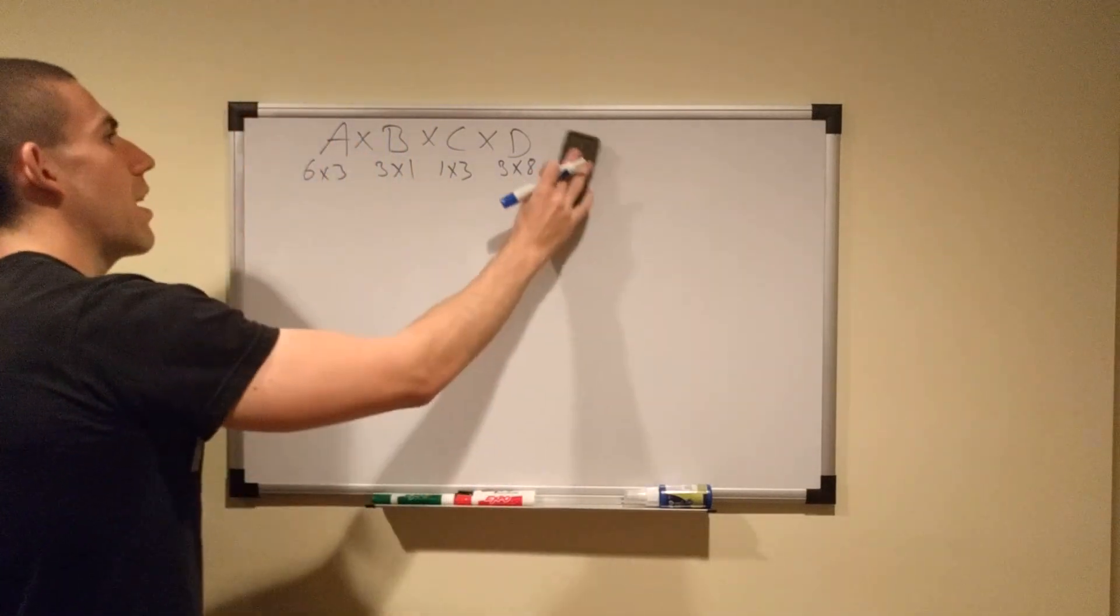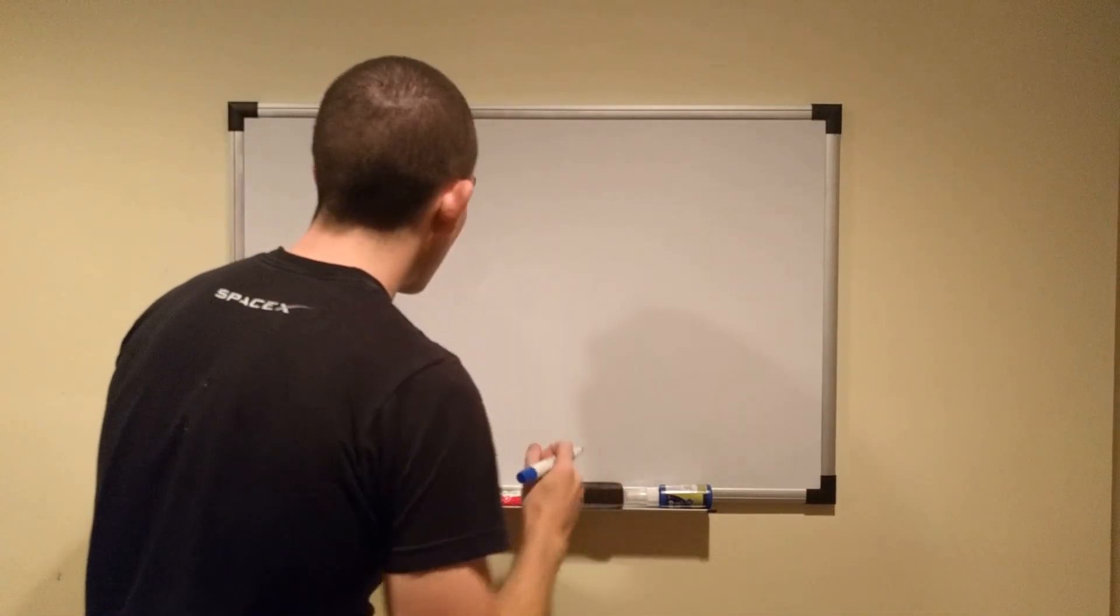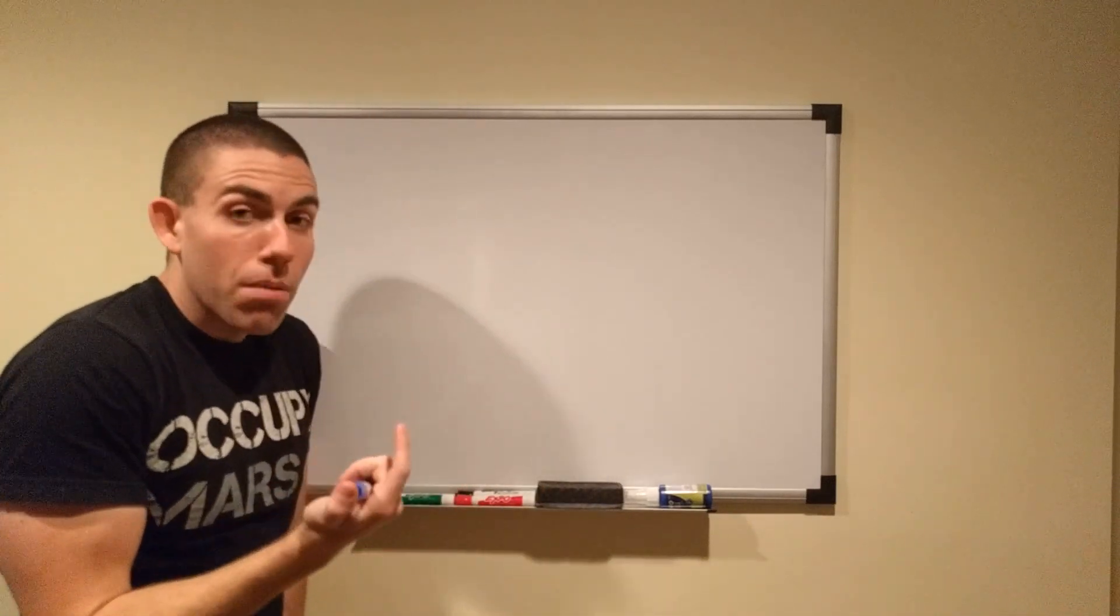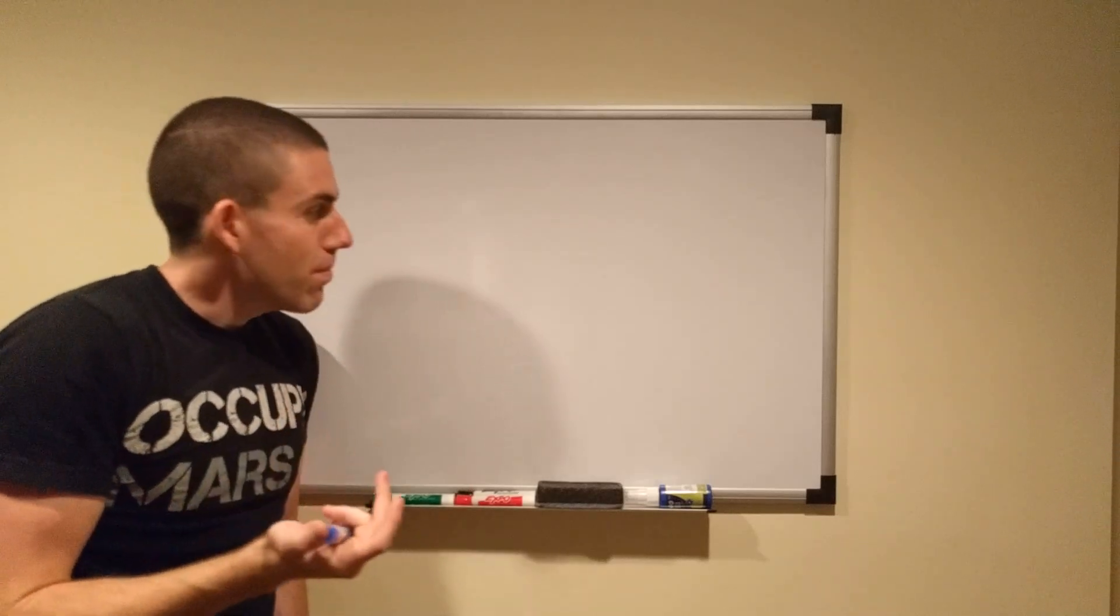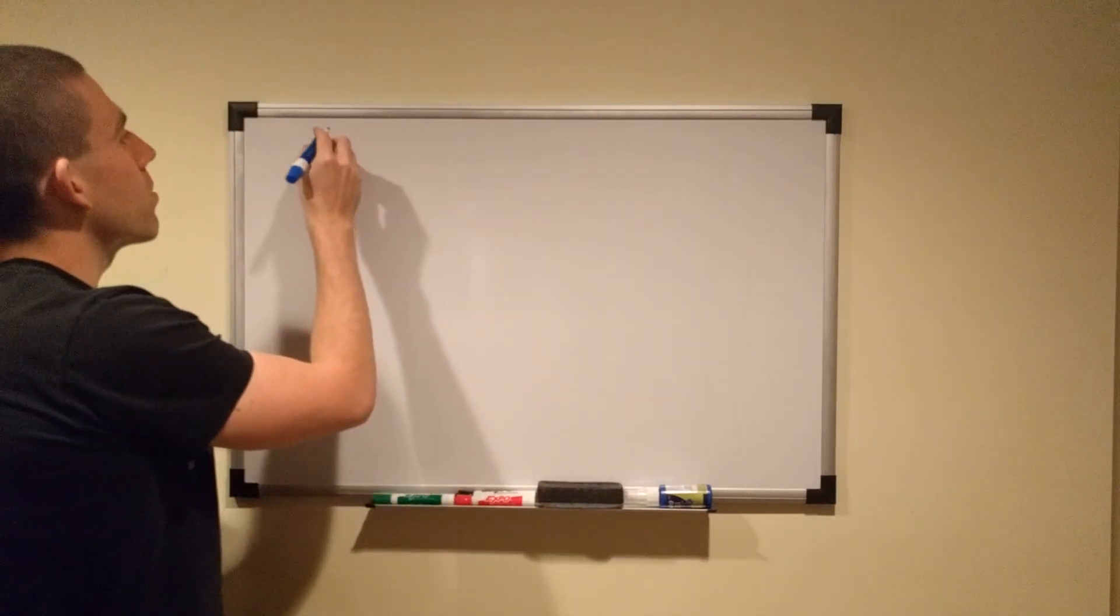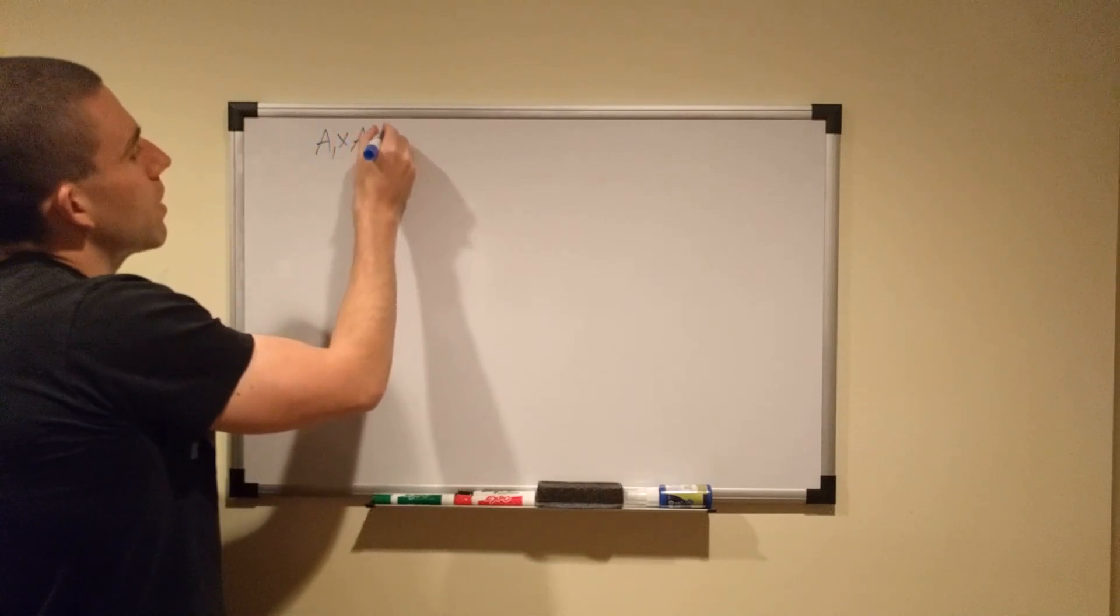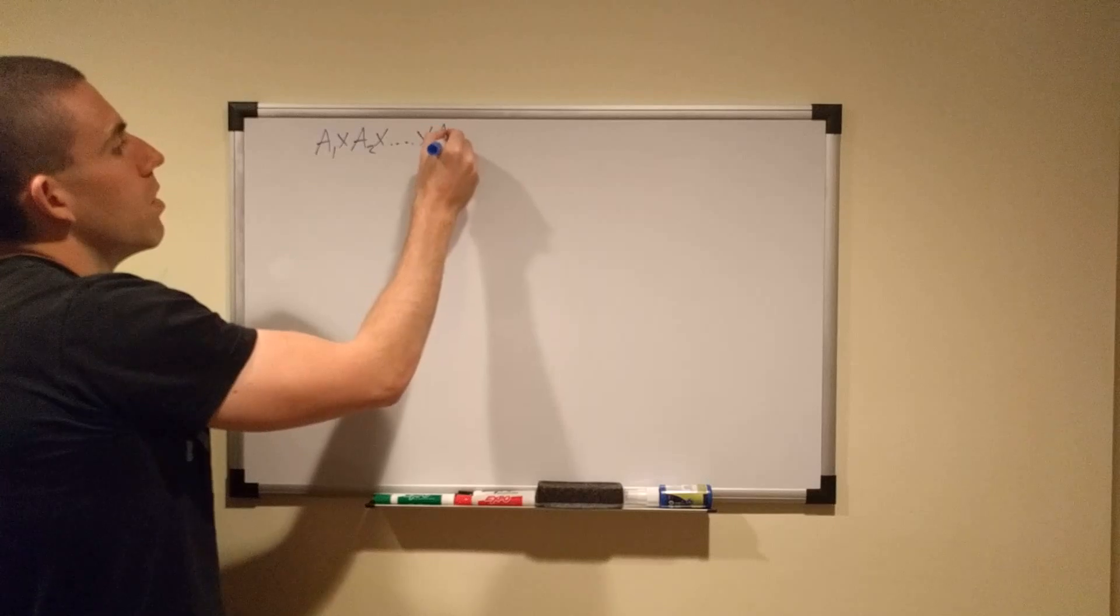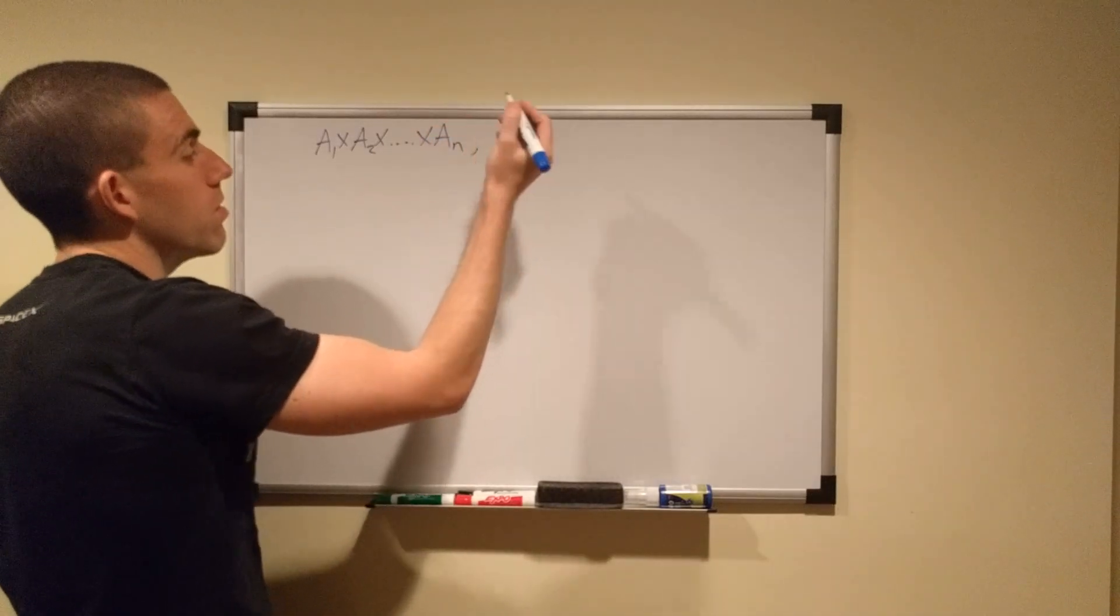The question, though, is how do we find the optimal ordering of parentheses? Because that may not have even been the optimal ordering. There were any number that I could have gone with. I could have done any possible permutation that you could imagine. So how do we find it? Say we have a set of matrices denoted maybe A1 times A2 times all the way up to An.